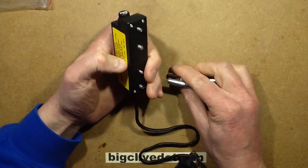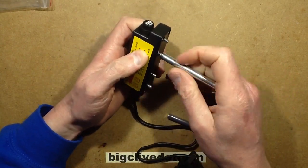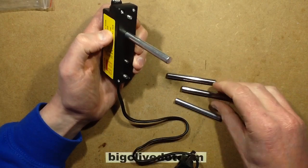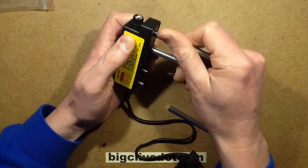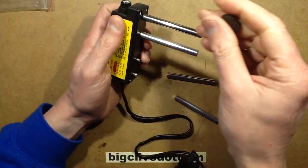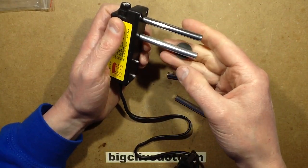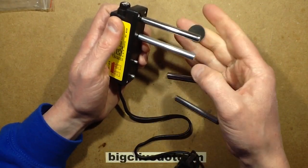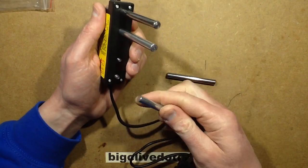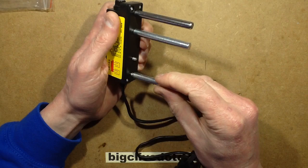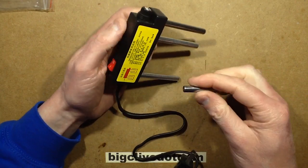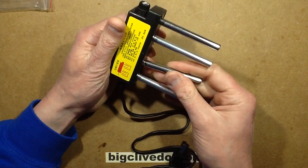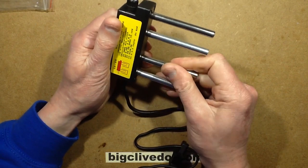So it comes with these electrodes that screw on. They seem to be threaded differently. I'm guessing they're different alloys there. I'm guessing maybe this one may be aluminum and this one is steel based where it has a high ferrous content.